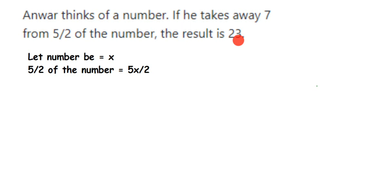We have to form an equation and then find out the number. Since we don't know the number, I have assumed the number to be x. Now they have also given that he takes away 7.